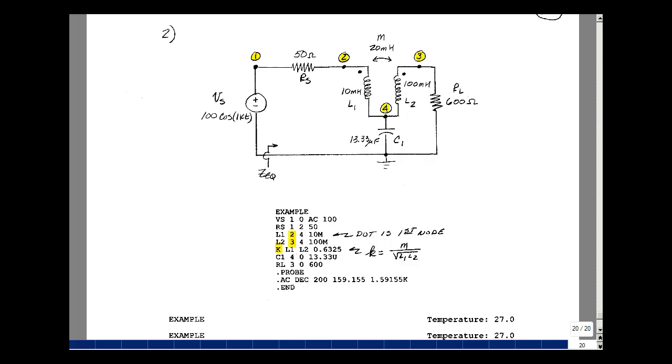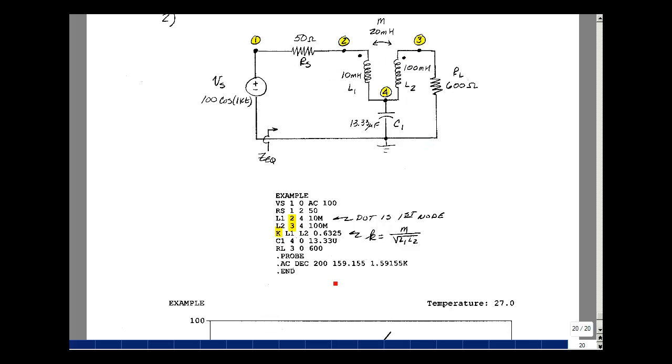I'm interested in one frequency, which is 1,000 radians per second. If you divide by 2 pi, that's 159.155. But with PSPICE, we need to plot at least two points. Let's do 200 points, just do one decade. So you get a smooth graph.